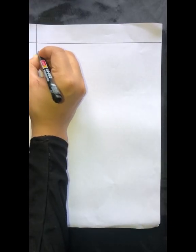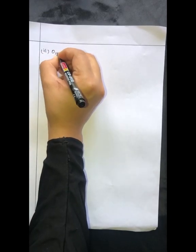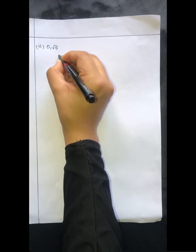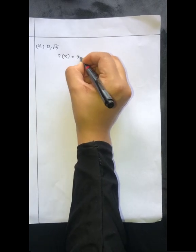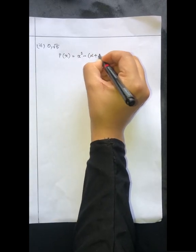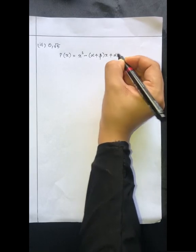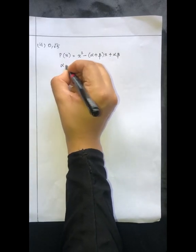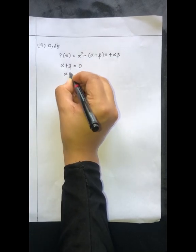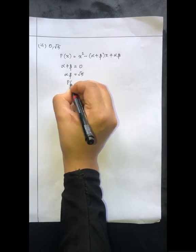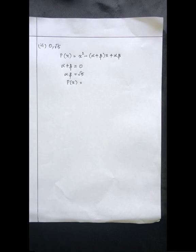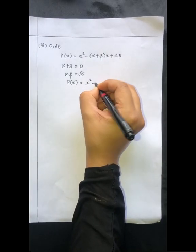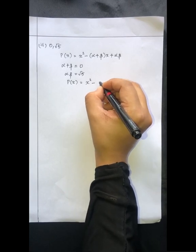For the third sub-question, the values are 0 and root 5. Using the equation p(x) = x² minus (alpha plus beta) into x plus alpha into beta, we substitute: alpha plus beta equals 0 and alpha into beta equals root 5. Since 0 into x is 0, the required polynomial is p(x) = x² + root 5.